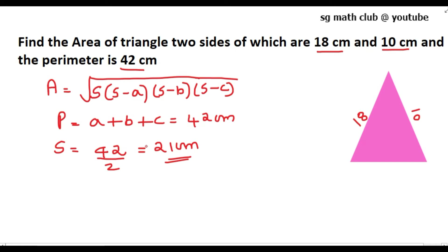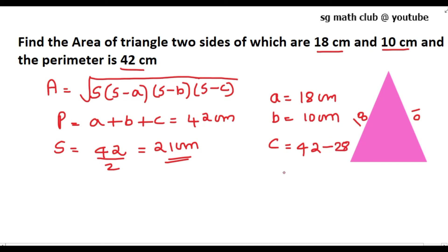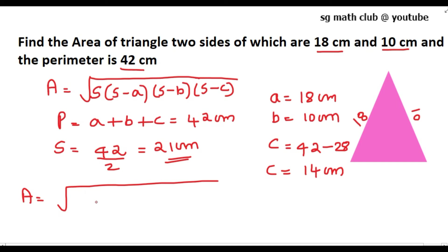Now we need to find c, because a is already given as 18 cm and b is 10 cm. To find the third side c: 42 minus the sum of the two known sides (18 + 10 = 28) equals 14 centimeters.